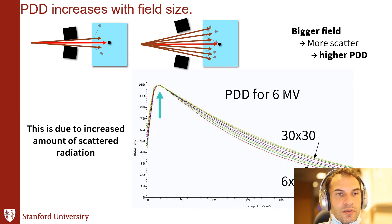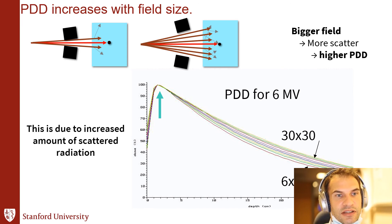PDD also increases with field size — more specifically, the slope gets more shallow. At deeper depths, the value of PDD at a given depth increases with increasing field size. It's simply because the bigger the field size, the more scattered radiation contributes, which raises the PDD curve.